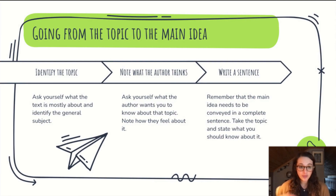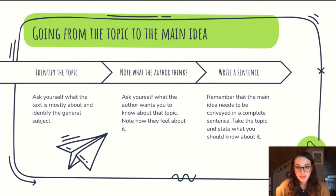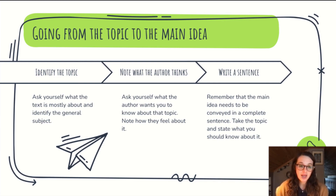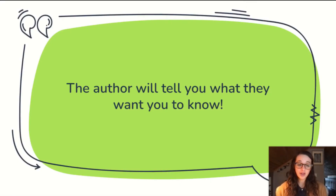Let's review. How do we go from topic to main idea? First, identify the topic — ask yourself what the text is mostly about and identify the general subject. Then note what the author thinks about it — ask yourself what they want you to know and note how they feel. Then take that information and write a sentence or make a statement. Remember, the main idea needs to be conveyed in a complete sentence, so take the topic and state what you should know about it. In nonfiction texts, the author wants to make their point clear — they will tell you what they want you to know. You just have to read closely.